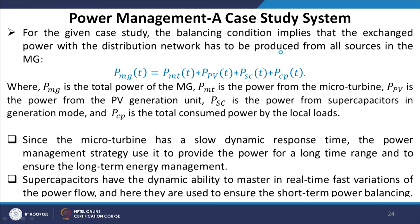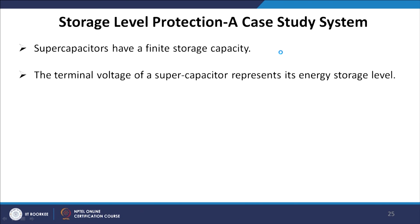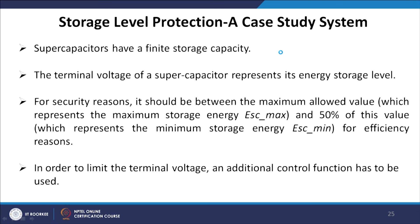Since the micro turbine has a slow dynamic response, the power management strategy uses it to provide power over a long time range, ensuring long-term energy management. The super capacitor, having a dynamic ability, manages real-time fast variations of power flow and is used to ensure short-term power balancing. Super capacitors have finite storage capacity — their terminal voltage represents their energy storage level. For security reasons, the voltage should be between the maximum allowed value, representing maximum stored energy, and 50 percent of this value for efficiency reasons, representing the minimum storage. An additional control function is used to limit the terminal voltage.